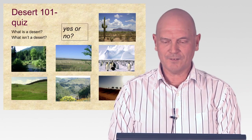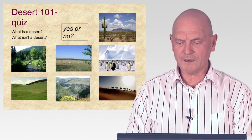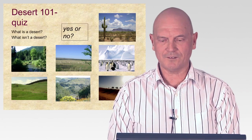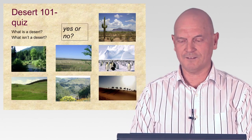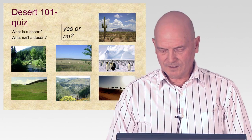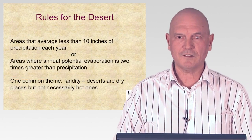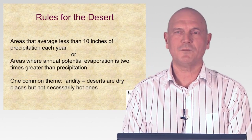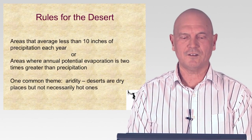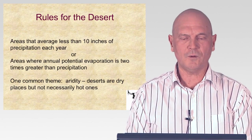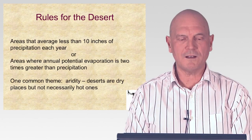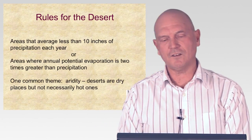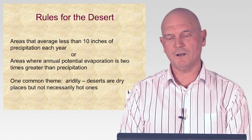And some people wouldn't recognize the one in the middle on the far right as a desert because it's nice — it's Antarctica. So let's look at the agreed-upon definitions from ecologists around the world. It seems to be pretty well agreed that areas averaging less than 10 inches of precipitation a year would be called a desert.